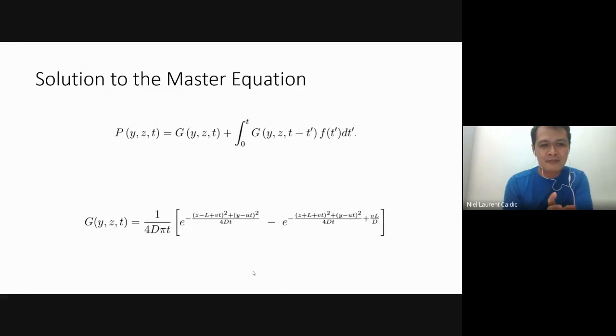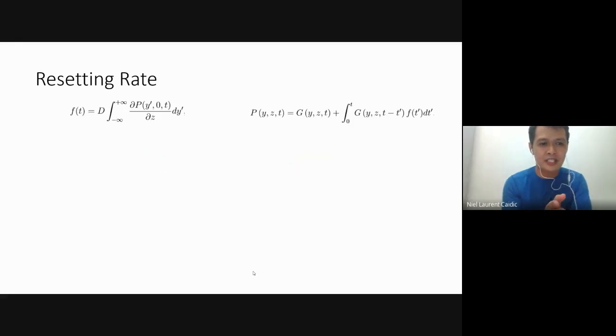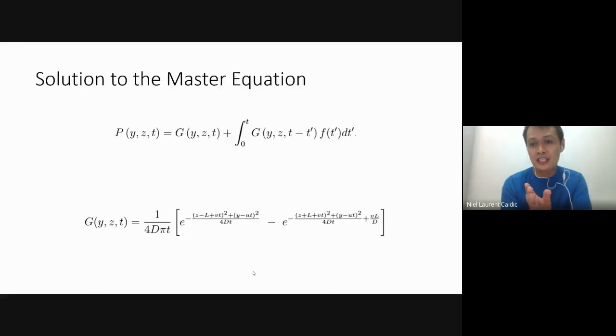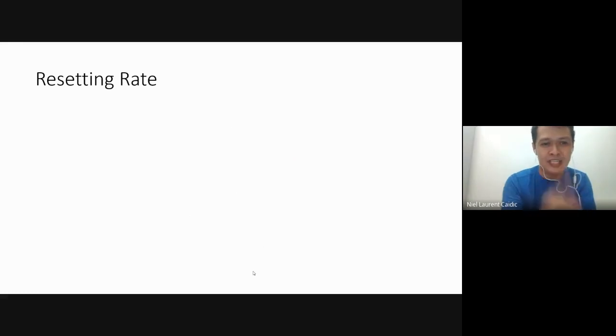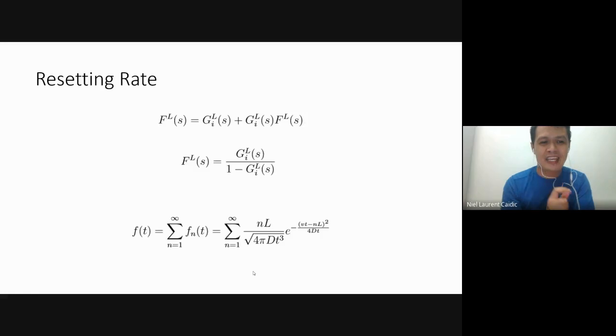To transform this discrete master equation into continuous master equation, we let delta Z, delta Y, delta T approach zero and take the Taylor series. This is now our continuous master equation with Kronecker delta Y, Kronecker delta X minus L, F of T. F of T is defined at the bottom and we call it the resetting rate. This equation is a non-homogeneous differential equation. The non-homogeneous part is zero if Y is not simultaneously equal to zero and X equal to L. The rest correspond to the homogenous solution. But if Y equals zero and X equals L, the non-homogeneous part will be F of T, so we can get the complete solution.